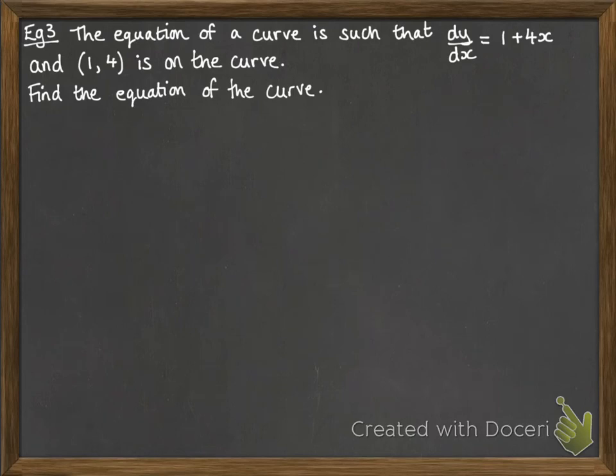Let's see it in context. So the equation of a curve is such that dy/dx equals 1 plus 4x and 1, 4 is on the curve. We're going to find the equation of the curve. So we know the gradient function, so we can integrate it to work out the equation of the curve. So integrating that,